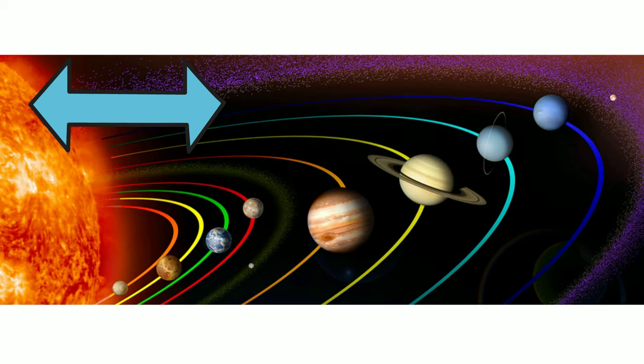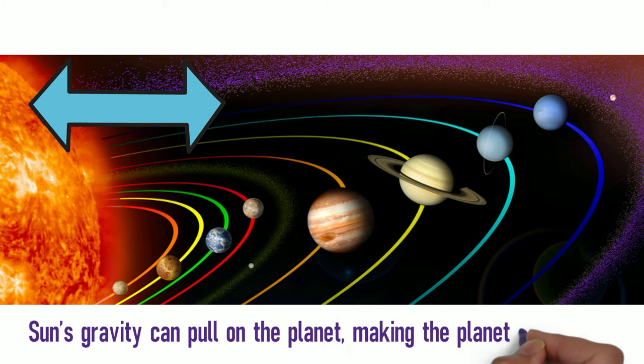And the closer a planet orbits the Sun, the Sun's gravity can pull on the planet making the planet orbit faster.